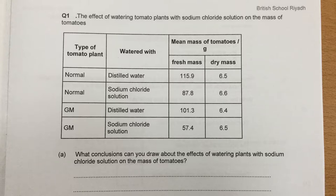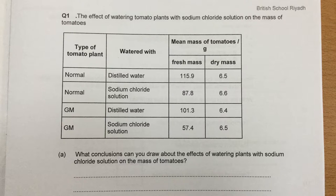The question asks what conclusions can be drawn about the effect of watering plants with sodium chloride solution on the mass of tomatoes. We're not concerned about normal versus GM — just fresh mass and dry mass. There are two marks: one for fresh mass and one for dry mass. We can see that fresh mass decreases, so we say there is a decrease in fresh mass. For dry mass, there is a very small, insignificant increase, so we say there is no effect on dry mass — or if we do mention a small increase, we must highlight that it is indeed very small.